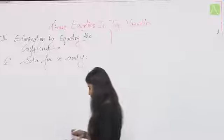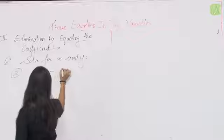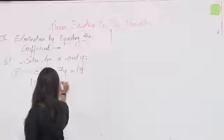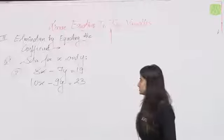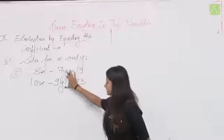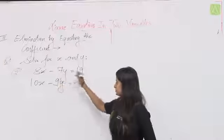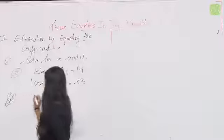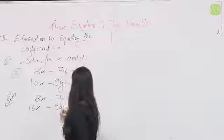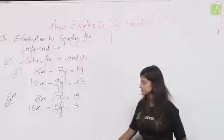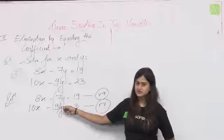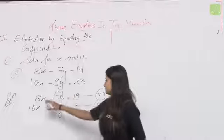Second question: 8x − 7y = 19 and 10x − 9y = 23। Same process। y के coefficients को same करने के लिए 7 और 9 का LCM लेंगे — 63 आएगा। 63 बनाने के लिए पहली equation को 9 से multiply करेंगे और दूसरी को 7 से। LHS और RHS दोनों तरफ multiply करना compulsory है।